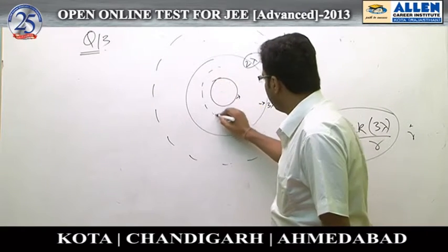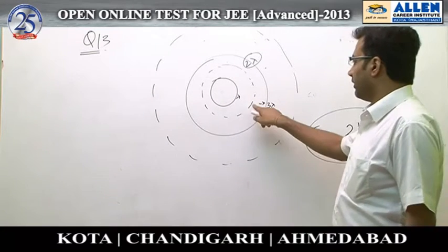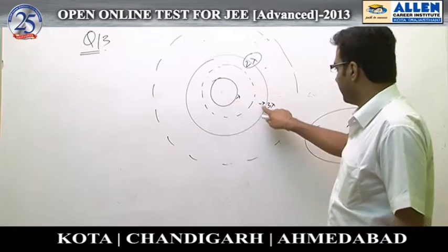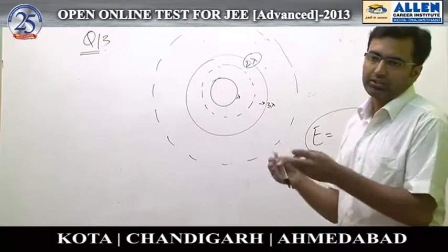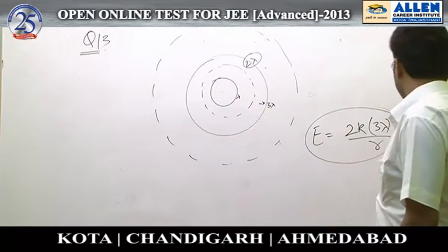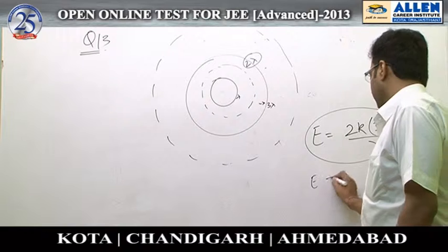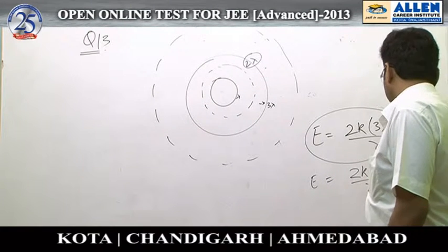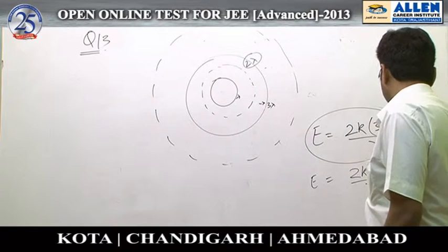Had it been a point inside, somewhere here, the field is contributed only by lambda, because this uniform structure gives a zero field inside, and so does 3 lambda. So for a point inside, the field is 2k lambda by r, again radially outwards.